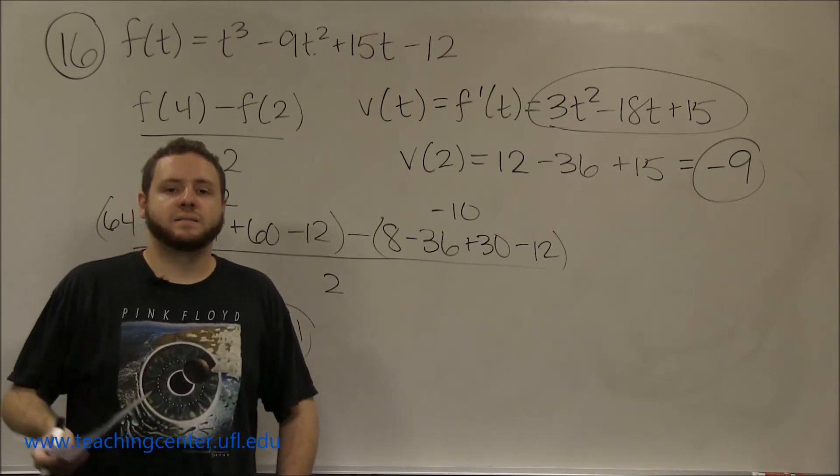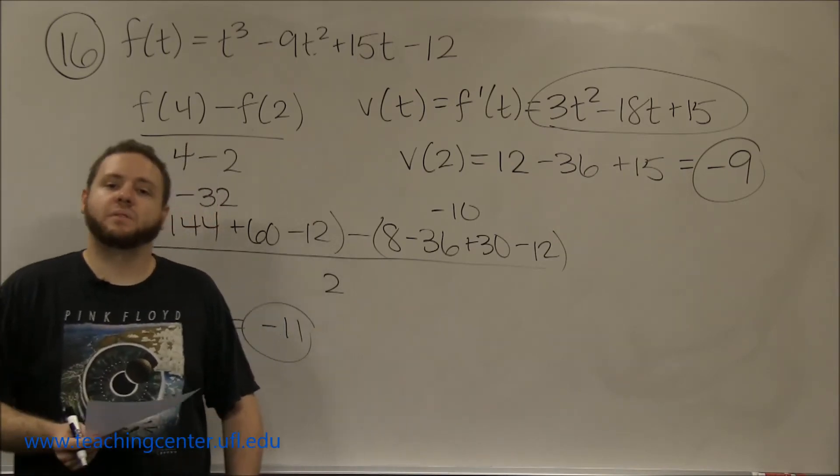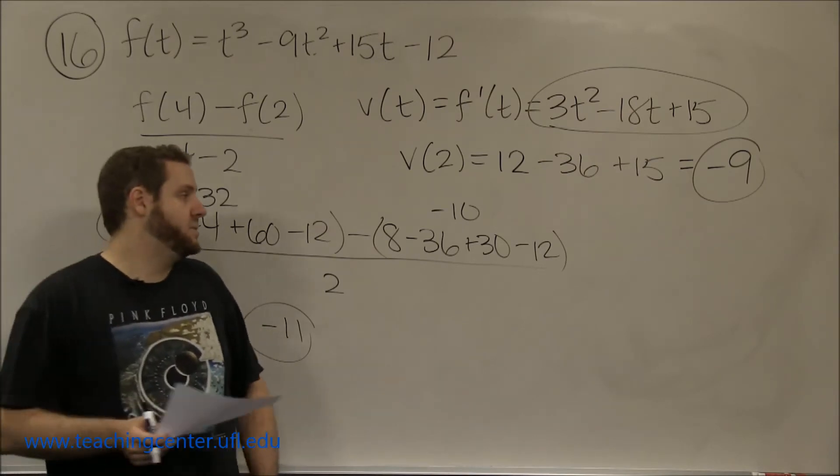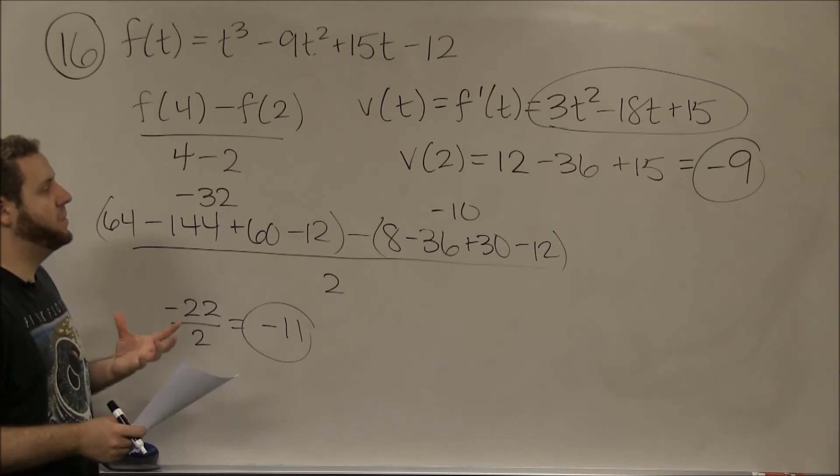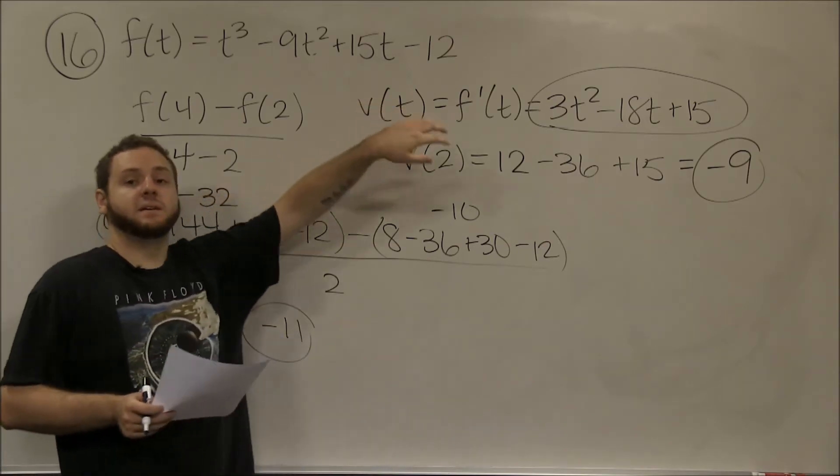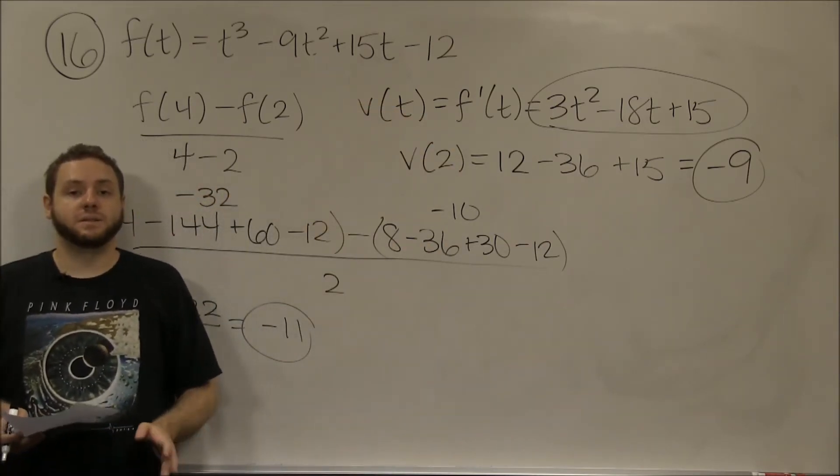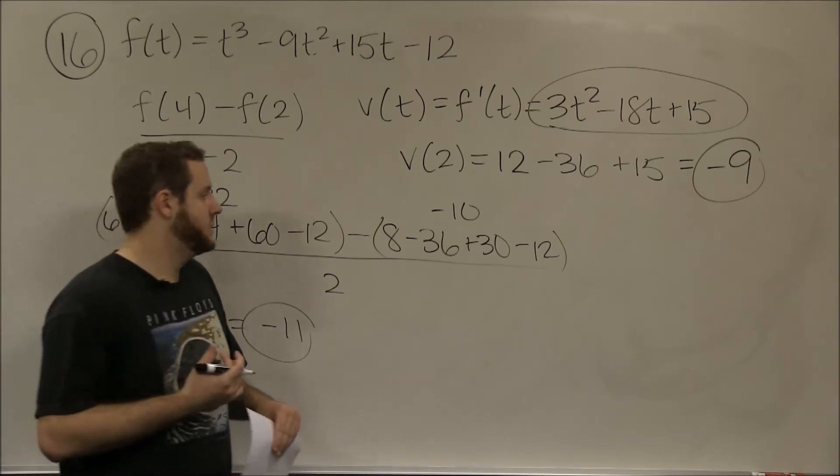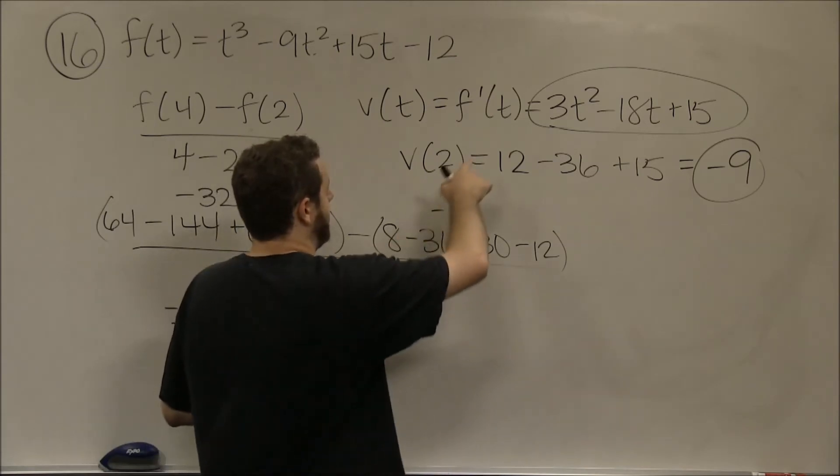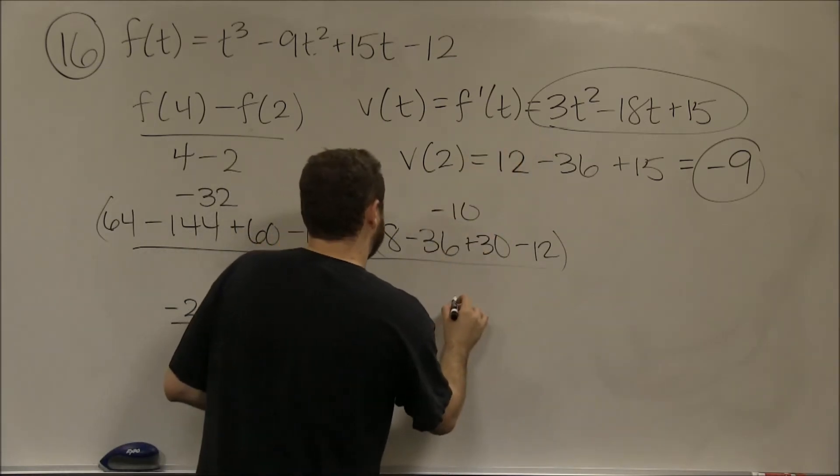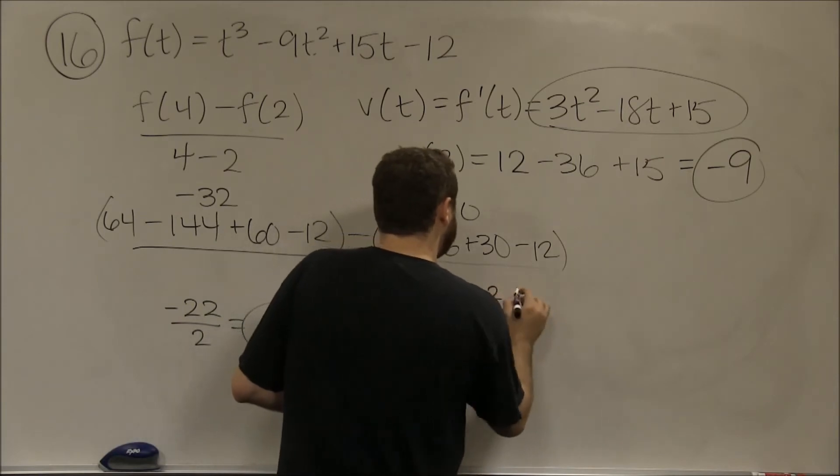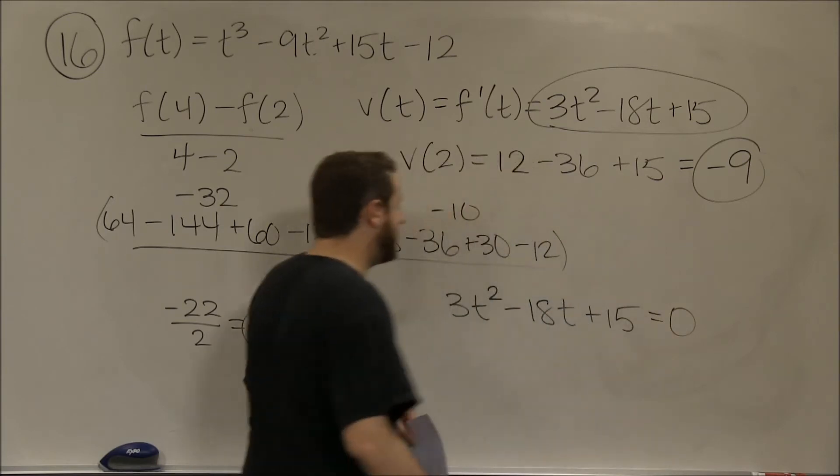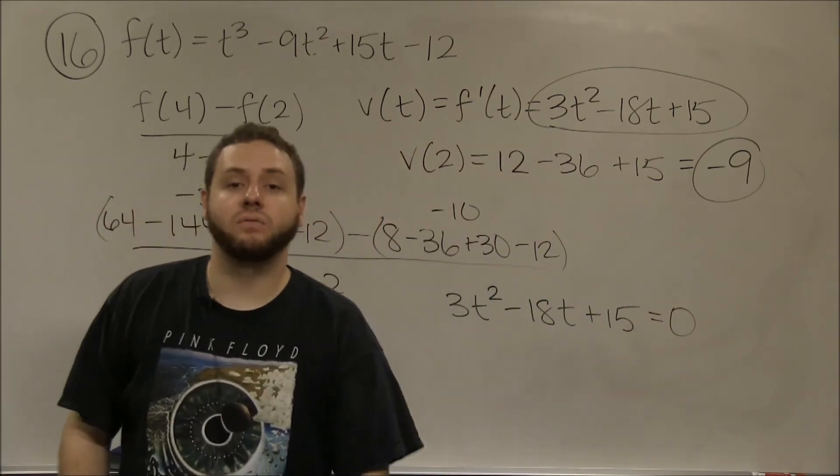Part d asks us to think about what the derivatives actually mean: at which times does the particle come to a stop? Coming to a stop would mean that its velocity, its instantaneous rate of change at any point, is 0. So this is asking, where is the velocity 0? We want our velocity function to equal 0.